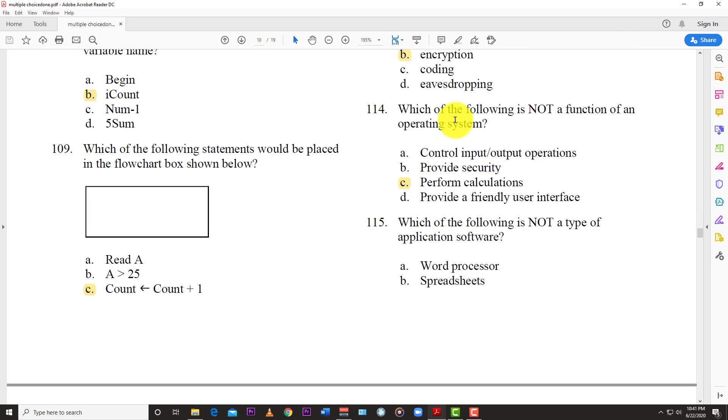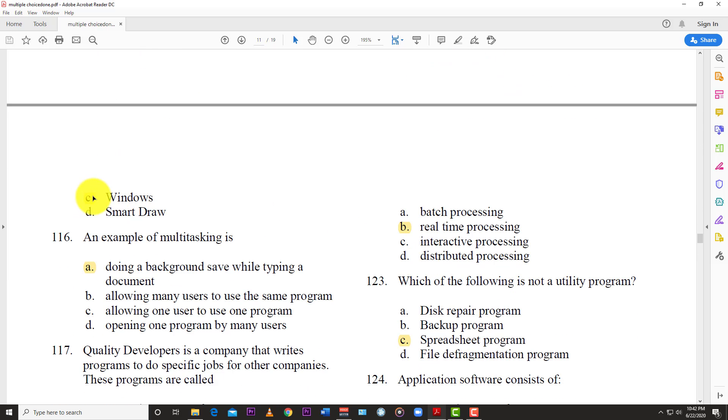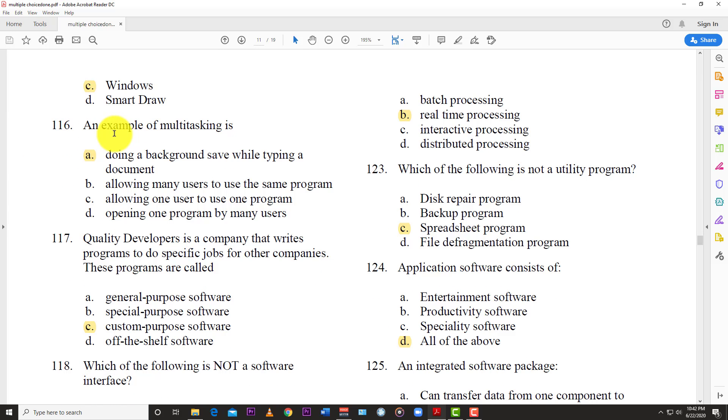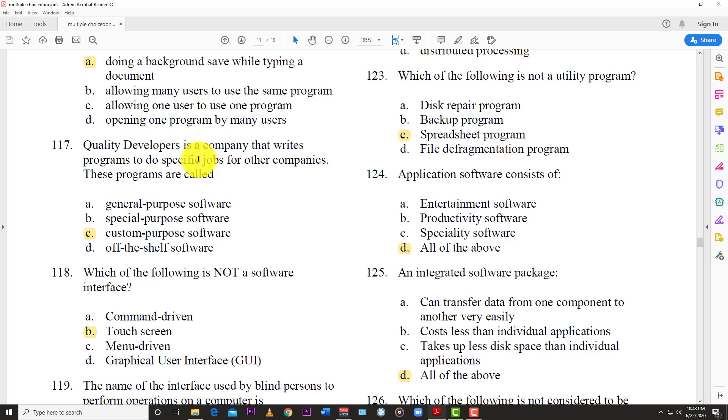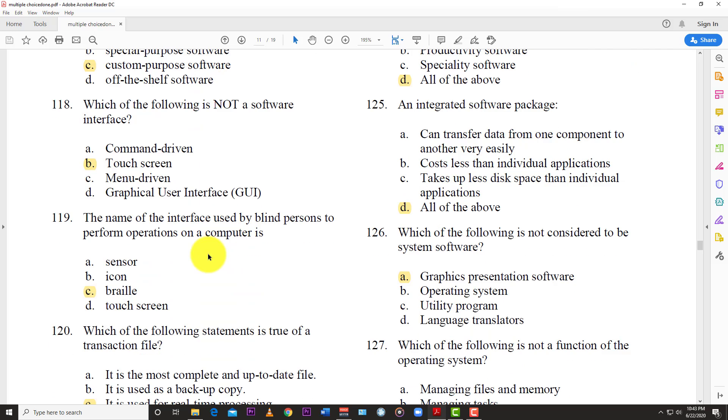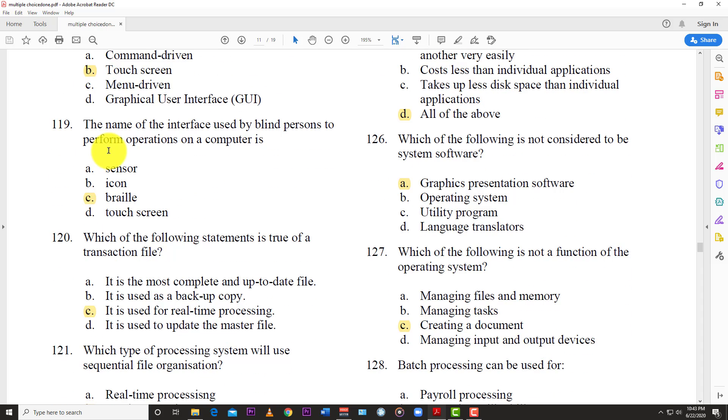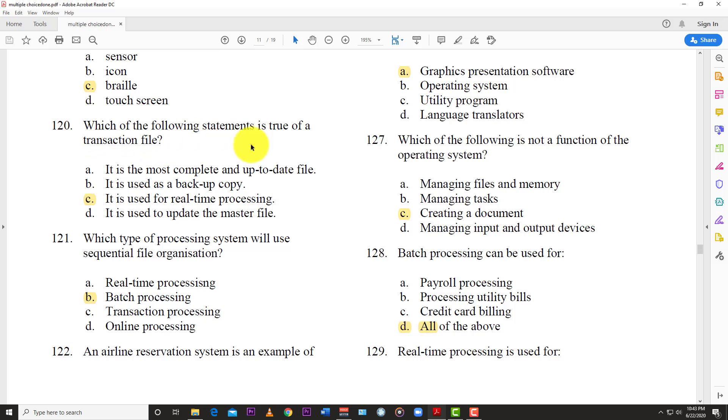Question 114: Which of the following is not a function of an operating system? And the answer is C, perform calculations. Question 115: Which of the following is not a type of application software? The answer is C, Windows. Everything run in Windows. It's not an application software, it's what the applications run in. Number 116: An example of multitasking is A, doing a background save while typing a document. Number 117: Quality developers in a company that writes programs to do specific jobs for other companies. These programs are called C, custom purpose software. Number 118: Which of the following is not a software interface? And the answer is B, a touchscreen. Number 119: The name of the interface used by blind persons to perform operations on your computer is C, Braille. Number 120: Which of the following statement is true of transaction file? And the answer is C, it is used for real-time processing. So we are at 120 and I think we'll study it for now. That's another 60 questions down.